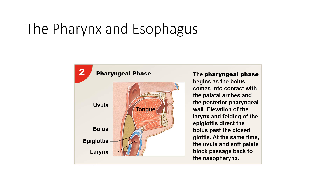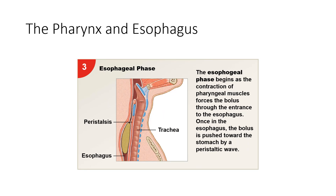The second phase is the pharyngeal phase. This begins as the bolus comes in contact with the palatal arches and the posterior pharyngeal wall. The larynx is elevated and the folding of the epiglottis results in the bolus passing the closed airway. At the same time, the uvula and the soft palate block passage back to the nasopharynx. The final phase is the esophageal phase, which occurs when contraction of pharyngeal muscles forces the bolus through the entrance to the esophagus. Once in the esophagus, the bolus is pushed towards the stomach by a peristaltic wave.